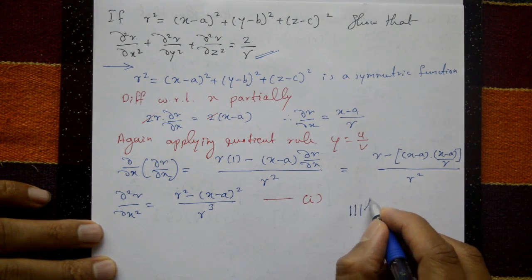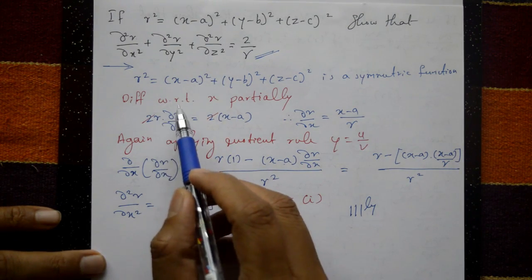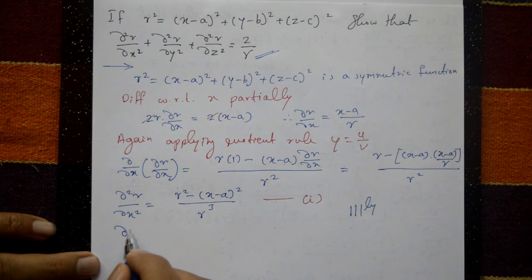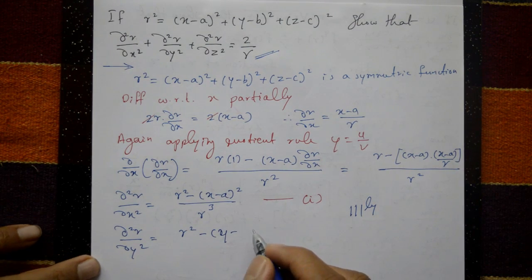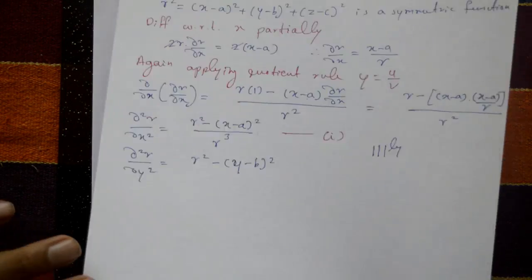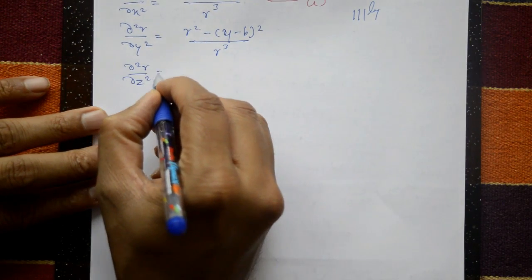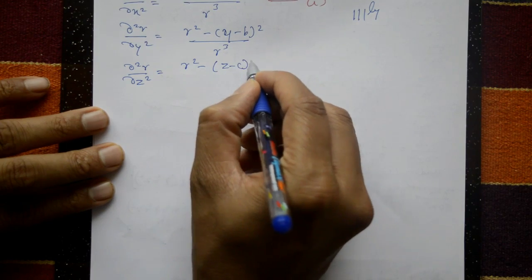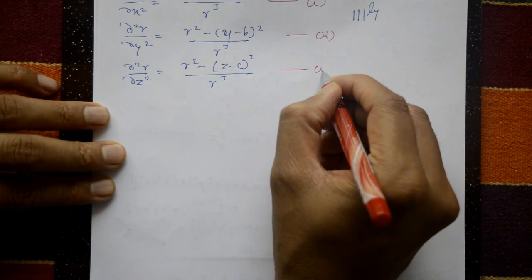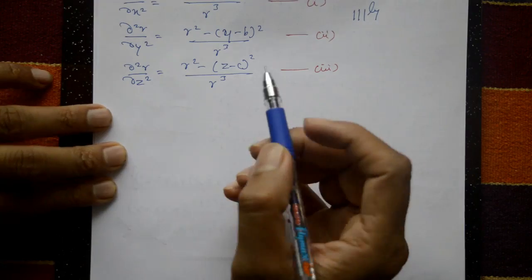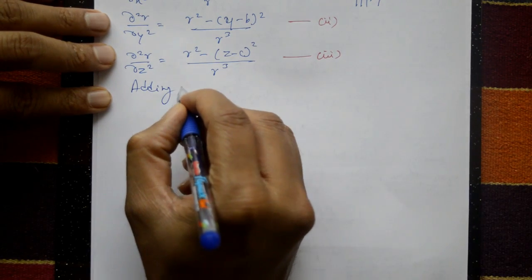Since r² is a symmetric function of x, y, z, it is not necessary to repeat the full derivation. By symmetry, ∂²r/∂y² = [r² - (y - b)²] / r³ (equation 2), and ∂²r/∂z² = [r² - (z - c)²] / r³ (equation 3).